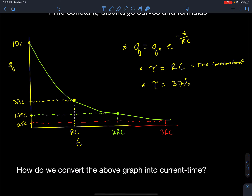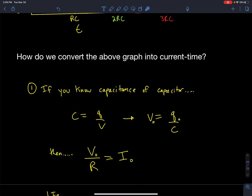So how do I convert the charge-time graph into a current-time graph? I have my charge and my time constant — how can I look at this graph and immediately convert it into a current over time graph? There are a couple of ways. If I know the capacitance of my capacitor, I can apply a formula to calculate my current, and if I know my time constant I can also calculate my current.